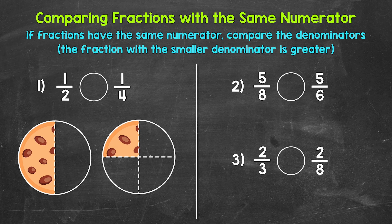Let's jump into number one, where we have one half and one fourth. Reading this comparison from left to right, we have: one half is greater than, less than, or equal to one fourth. If fractions have the same numerator, all we have to do is compare the denominators — the bottom numbers. The fraction with the smaller denominator is greater.